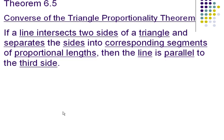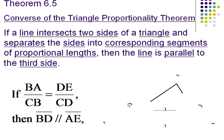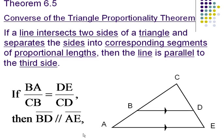Theorem 6.5, the converse of the proportionality theorem. If a line intersects two sides of a triangle and separates the sides into corresponding segments of proportional lengths, then the line is parallel to the third side. So here we're pointing out that there are proportional parts of the triangle first, and if that is the case, then the two lines in question are parallel.